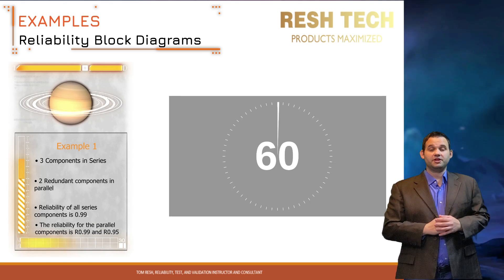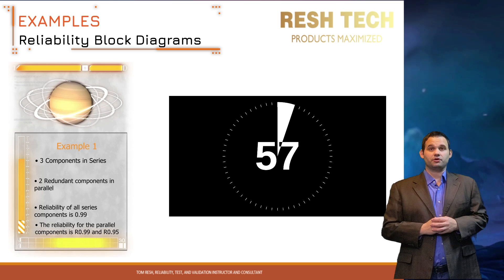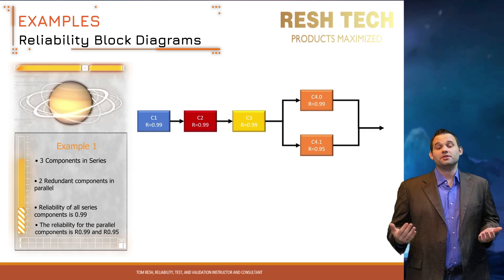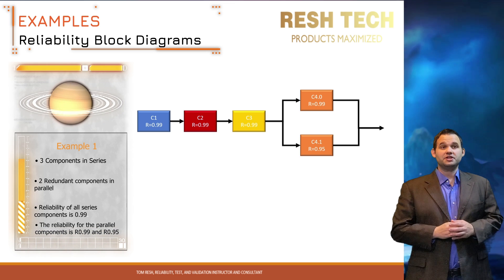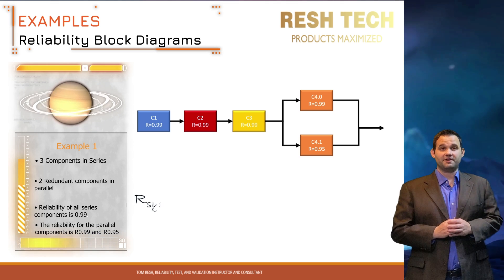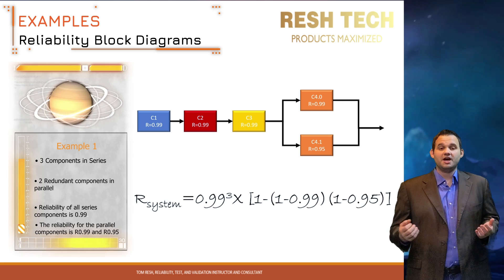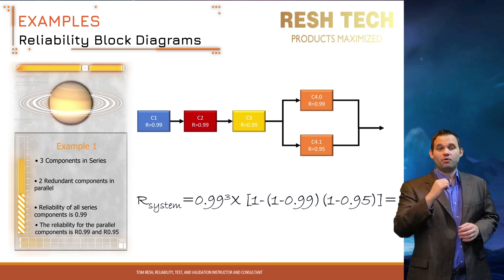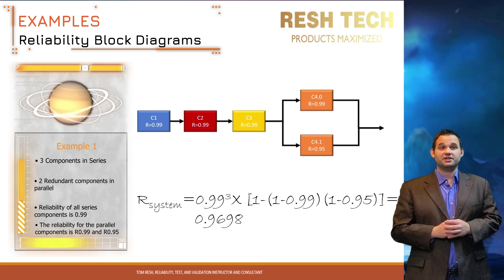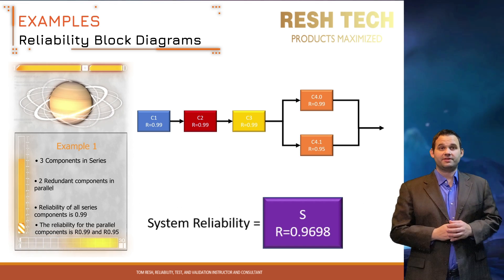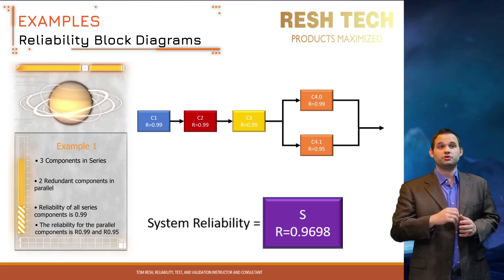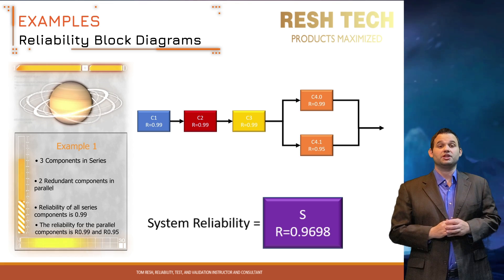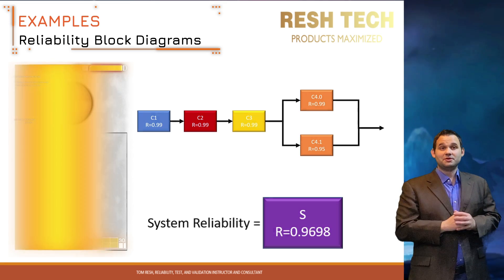Go ahead and pause the video and draw your reliability block diagram and solve before continuing. Here is what your reliability block diagram should look like. Entering each component's reliability value into the equation, we end up with a system reliability of 0.9698. Depending on whether the series components can compensate for each other's functions, the system could potentially be optimized further by placing series components in parallel.